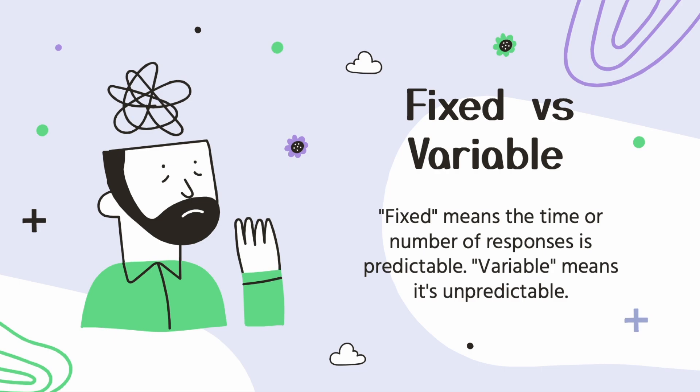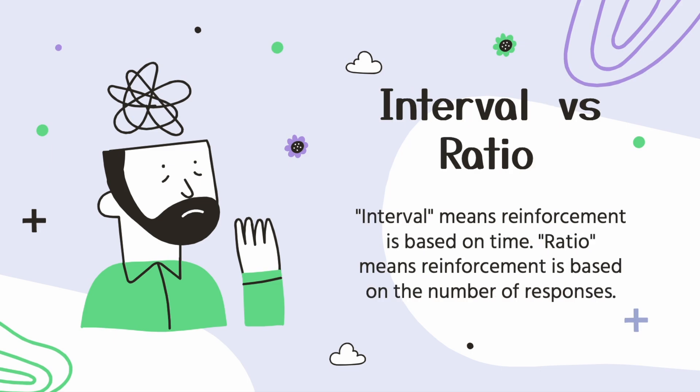With variable, you don't know when you're going to be reinforced next. Next, let's talk about interval versus ratio. The term interval means reinforcement is based on time. The term ratio means that reinforcement is based on the number of responses.